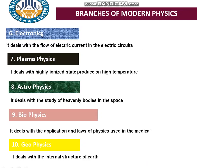The next branch is electronics. Electronics deals with the flow of electric current in electric circuits — specifically small currents flowing in electric circuits. For example, in TVs, diodes, mobile phones — the circuits in which current flows — the study of these is called electronics.